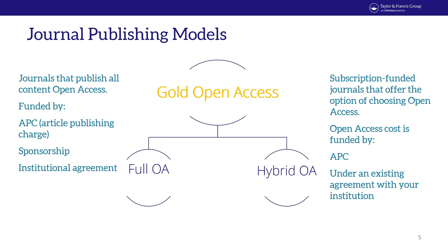There are two basic elements to open access: first, making content freely available in a digital format; and second, making content reusable by a third party. The author summarizes two key points — that open access allows for greater inclusivity and has the potential to democratize scientific knowledge.